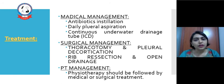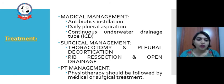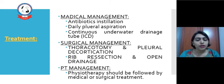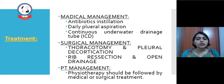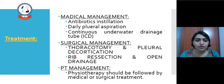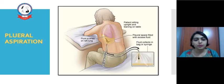Treatment can be divided into medical, surgical and physiotherapy. Medical treatment includes antibiotic installation, daily pleural aspiration and continuous underwater drainage tube. Surgical treatment may include thoracotomy and pleural decortication, or rib resection and open drainage. Physiotherapy should follow medical as well as surgical treatment.